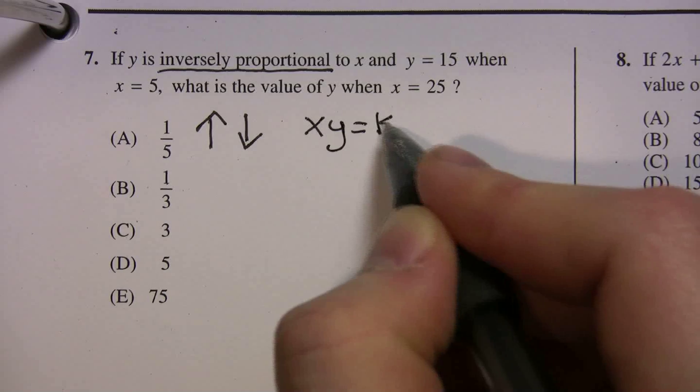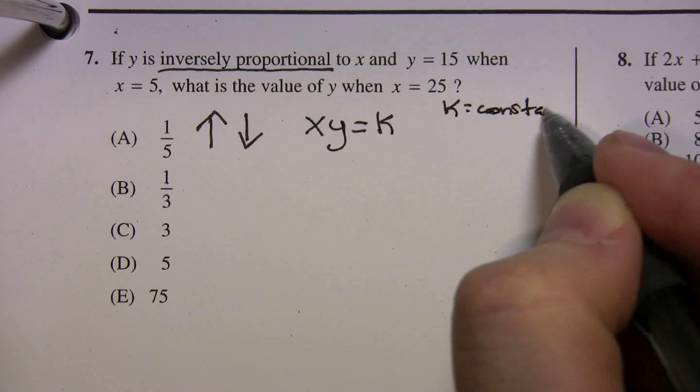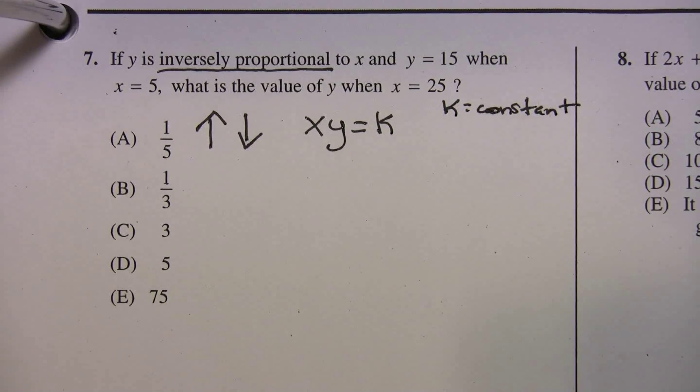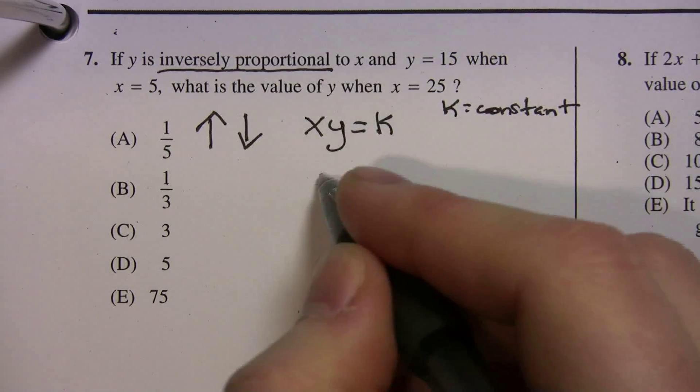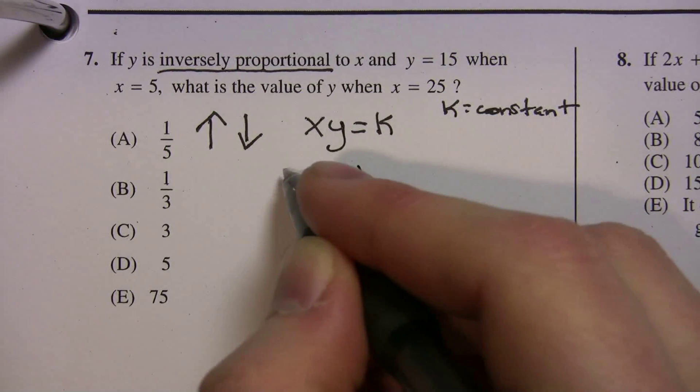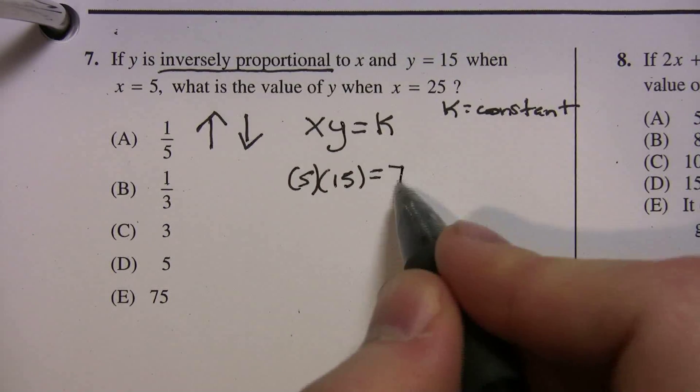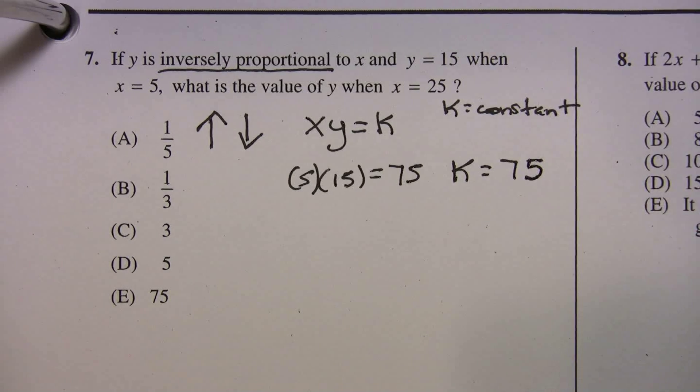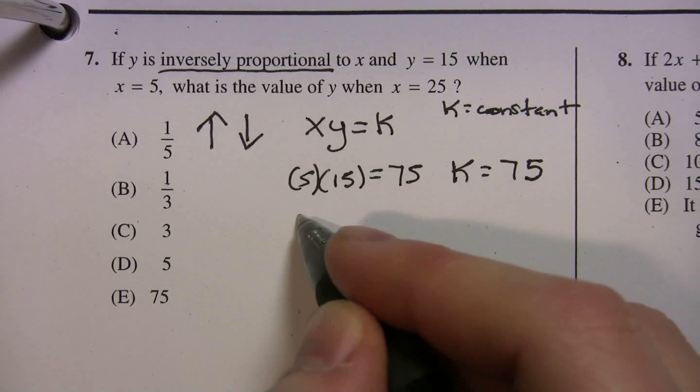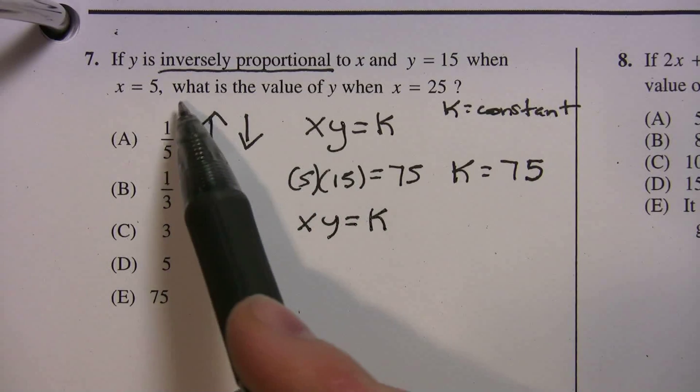x times y equals k, and k is your constant. It never changes. So let's plug in the values that we have into this first one. So y is 15, x is 5, 5 times 15 equals 75. So k equals 75. That's our constant. So now we're going to use the equation again, now that we have our constant, and plug in the other values.